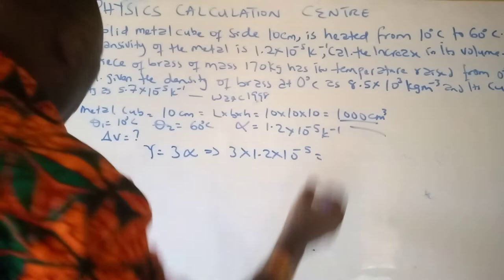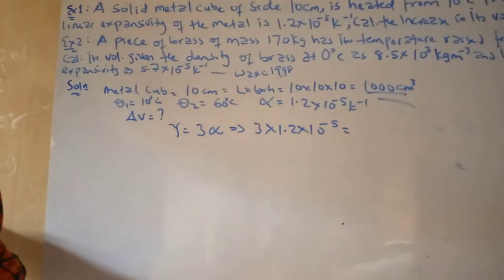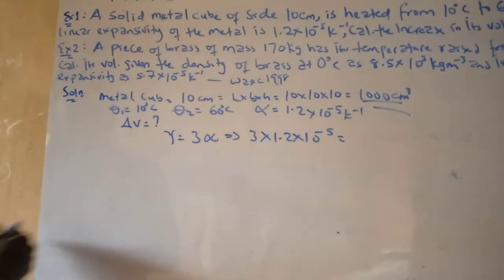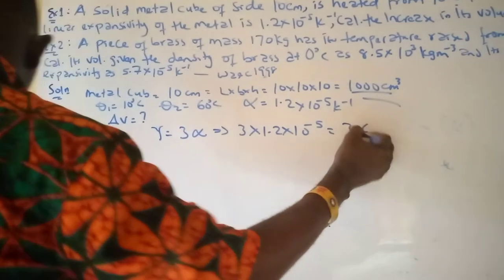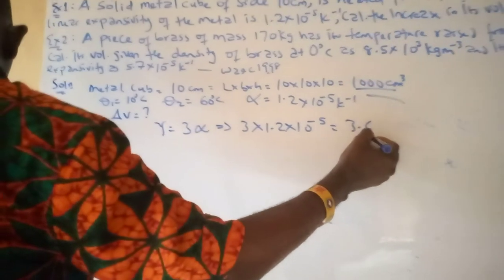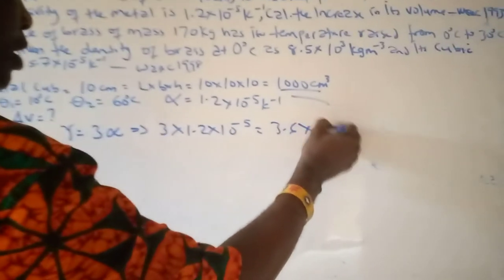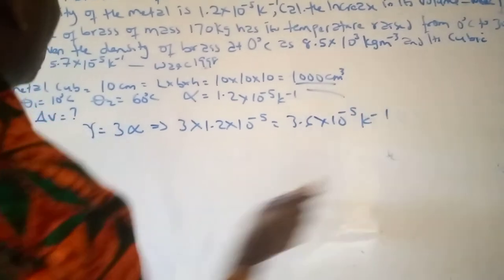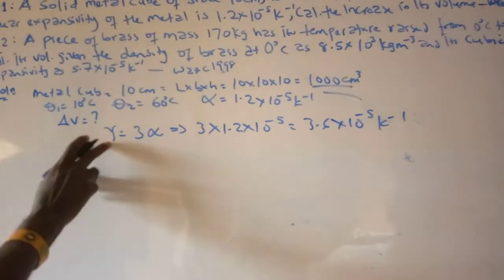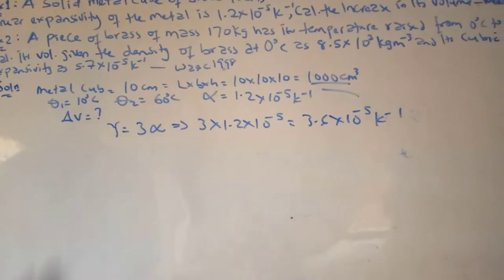So having done that, we get 3.6 × 10⁻⁵ per Kelvin. That is our cubic expansivity.